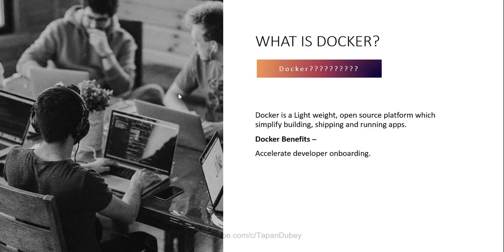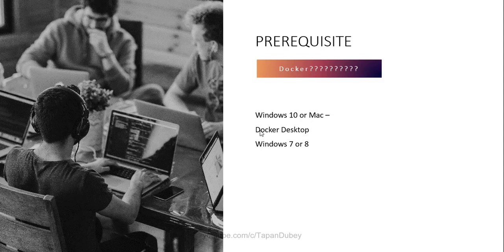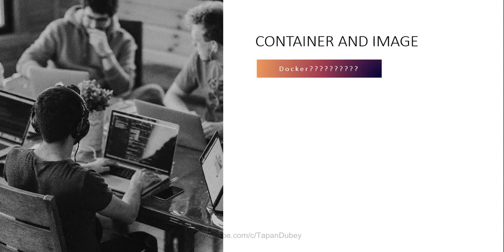Here are a few benefits of using Docker. Now, to start with Docker, what do we need? For Windows 10 or Mac users, we need Docker Desktop. I have already installed it on my machine, but you can find the link in the description. For Windows 7 or 8 users, you cannot use Docker Desktop — you have to go for Docker Toolbox instead.